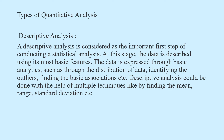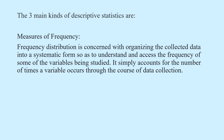Types of quantitative analysis — Descriptive analysis: A descriptive analysis is considered the important first step of conducting a statistical analysis. At this stage, the data is described using its most basic features. The data is expressed through basic analytics such as the distribution of data, identifying the outliers, finding the basic associations, etc. Descriptive analysis could be done with the help of multiple techniques, like finding the mean, range, standard deviation, etc. The first of the three main kinds of descriptive statistics is Measures of Frequency: Frequency distribution is concerned with organizing the collected data into a systematic form so as to understand and assess the frequency of some of the variables being studied. It simply accounts for the number of times a variable occurs through the course of data collection.